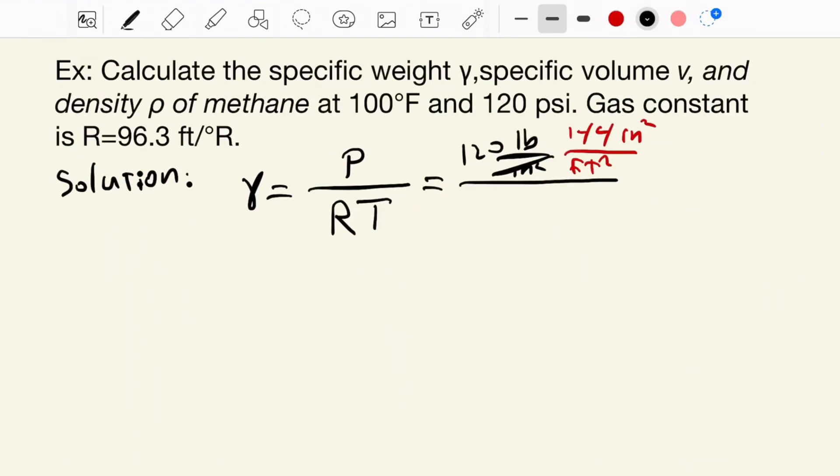Now, this one cancel this one. And R, gas constant, which is 96.3 foot over Rankine degree, times temperature. Temperature, which is 100 Fahrenheit. I want to change it to Rankine, so we have to add conversion factor, which is 460. Now, the unit of this also Rankine, so this Rankine cancel with this one.